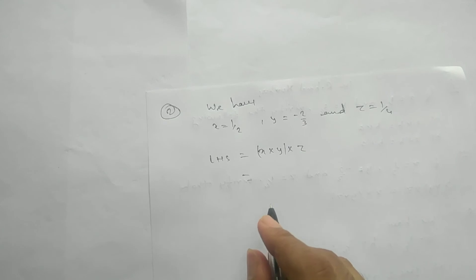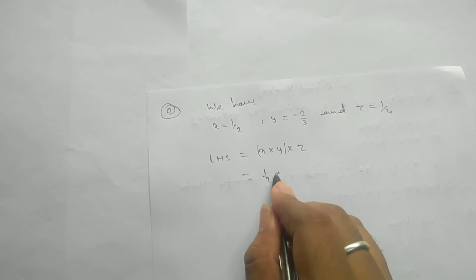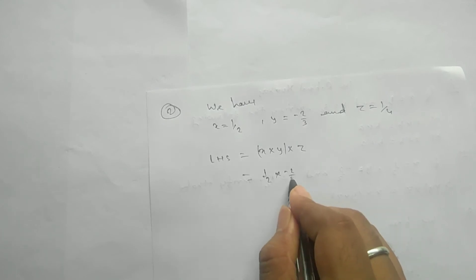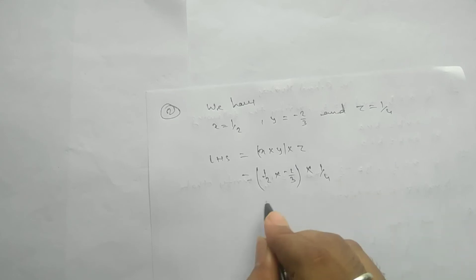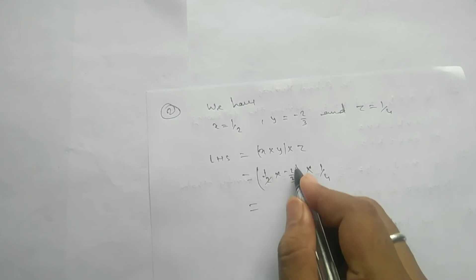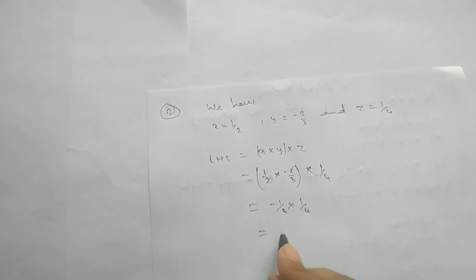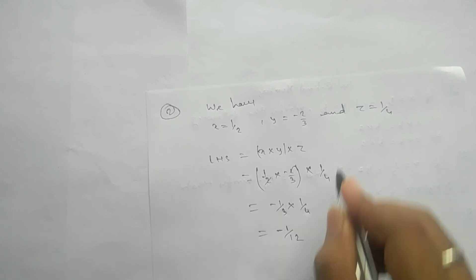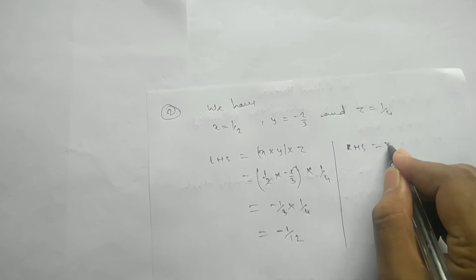For LHS, we compute (x into y) into z. That is (one by two into minus two by three) into one by four. The twos cancel, giving minus one by three, and then multiplying by one by four gives minus one by twelve.